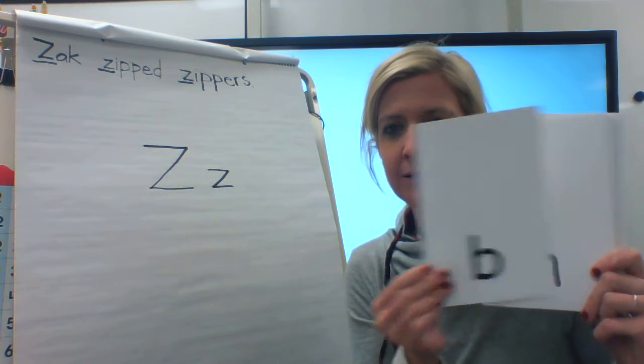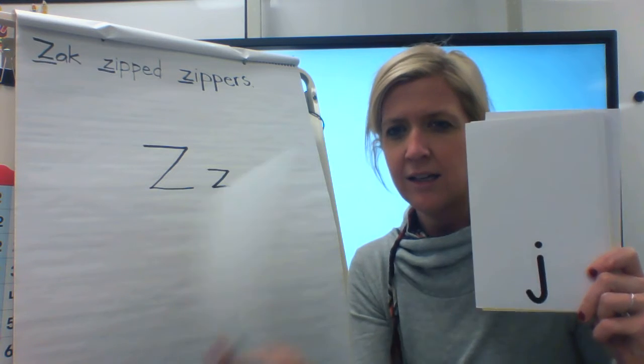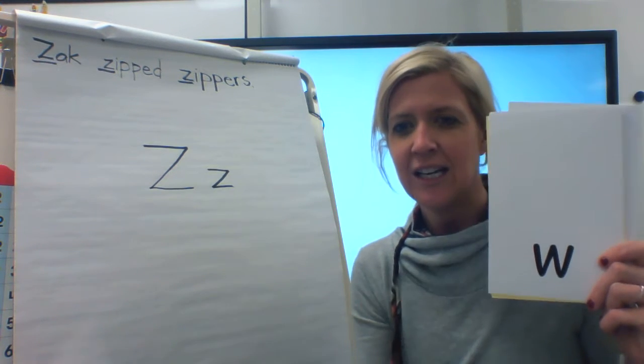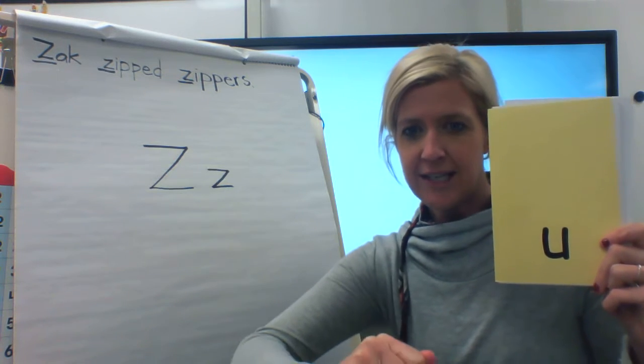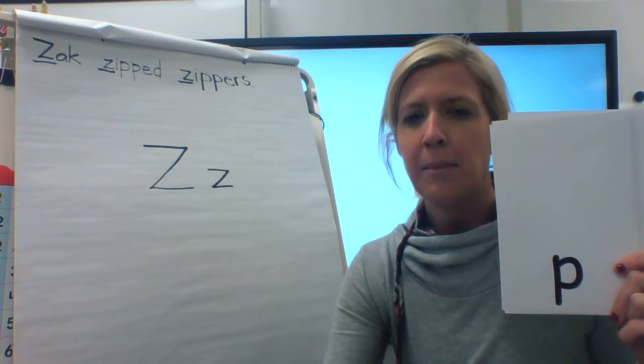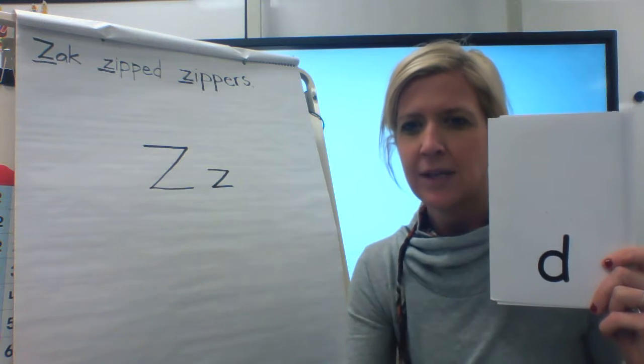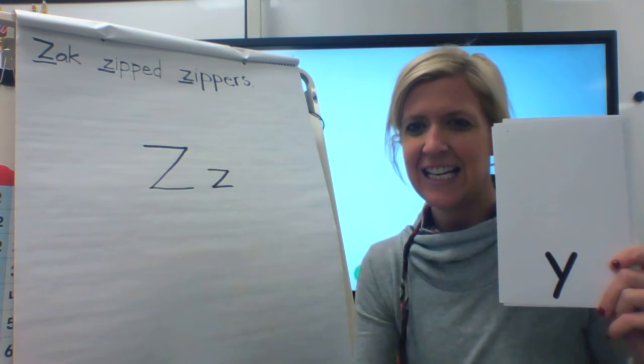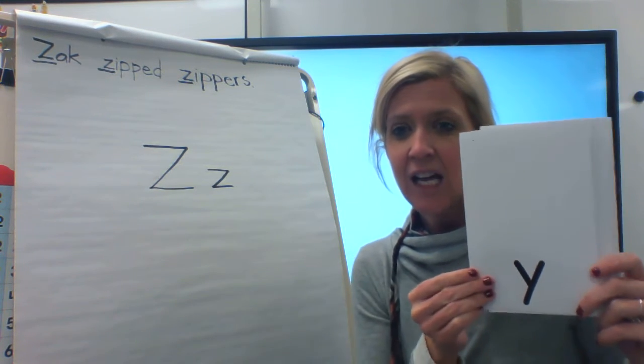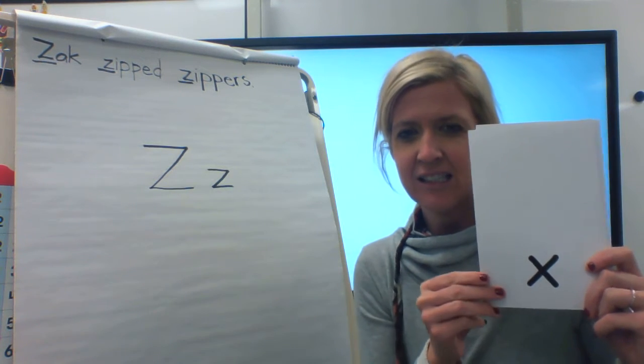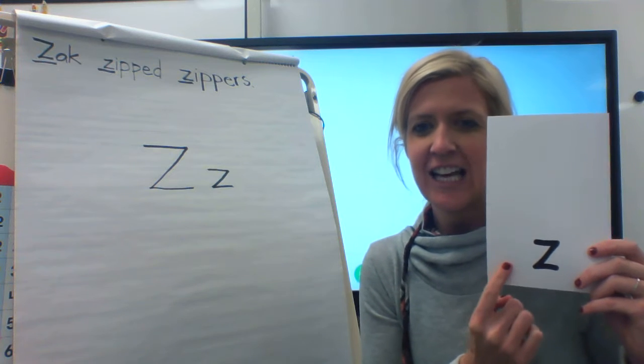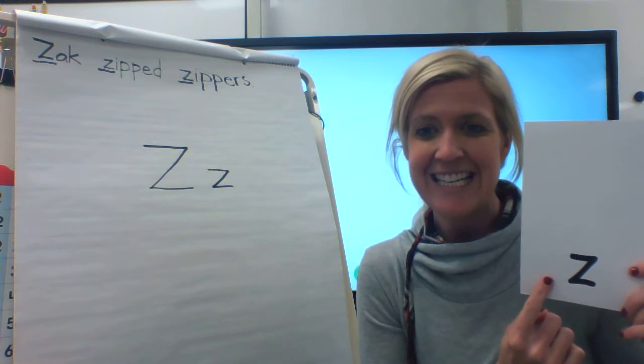B says b, H says h, J says j, W says w, here's our last vowel, U says u, P says p, D says d, Y says y, V says v, X says x, and here is the letter and sound that we are learning today.